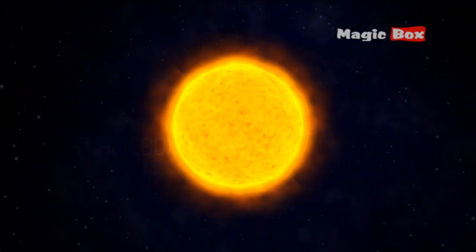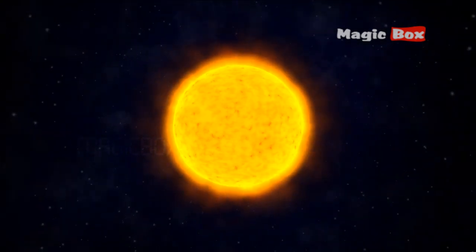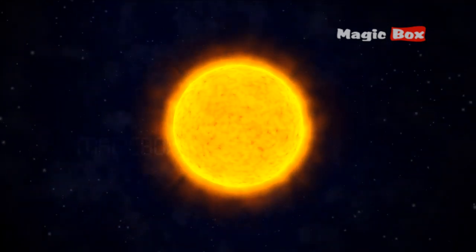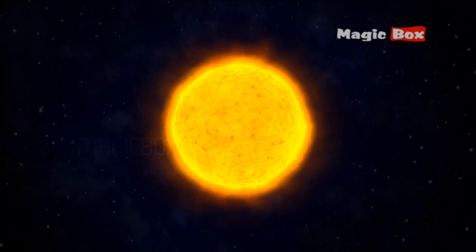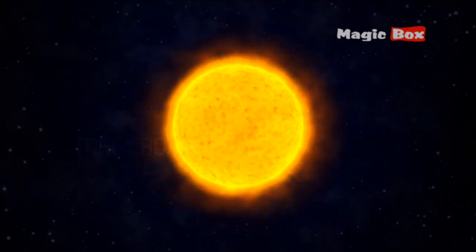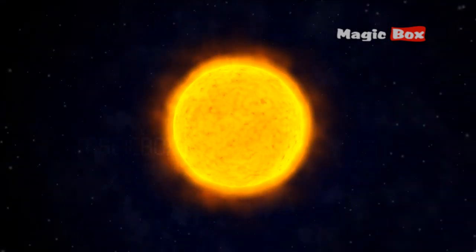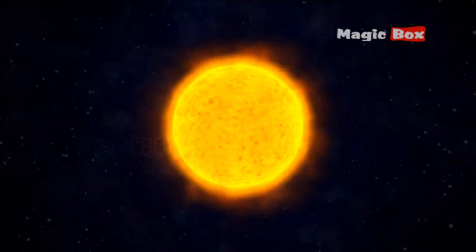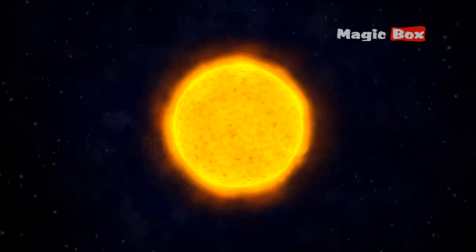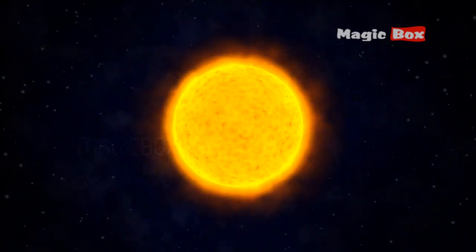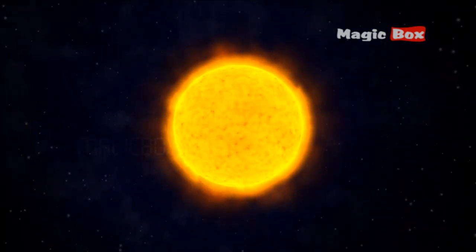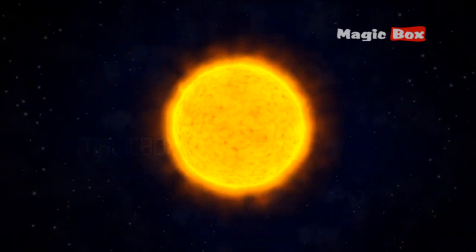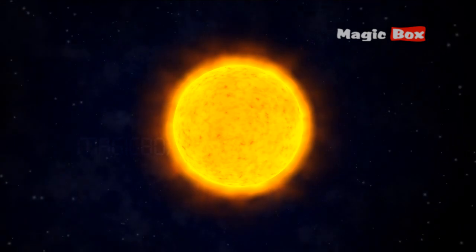There are 8 planets in our solar system. All these planets travel around the Sun. Planets are always spinning. A day is the time it takes a planet to spin around once. The time it takes a planet to travel around the Sun once is called a year. This journey is called its orbit.